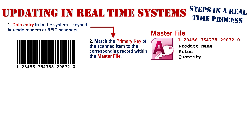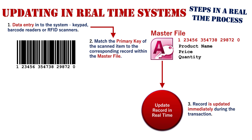Once we've scanned all our products, we need to actually make the sale, and therefore we need to update the record in real-time. The record is updated immediately during the transaction. Since we are purchasing this product, we need to deduct that quantity from the store's master file — so we are updating the master file. These two steps occur in real-time together: while the products are being scanned and purchased, the actual database is getting updated as well, all in real-time at the same time.